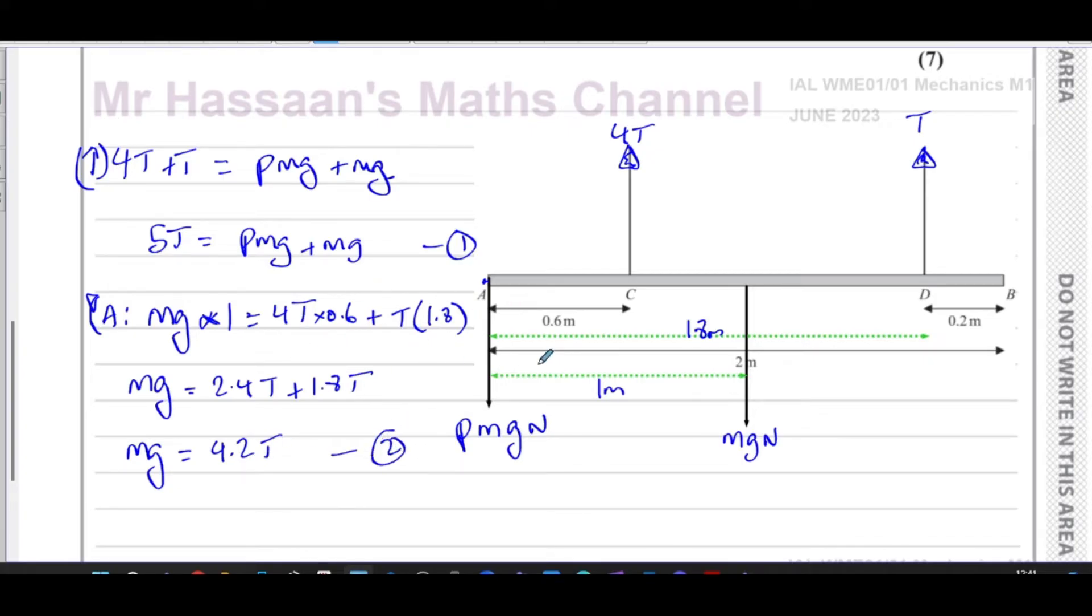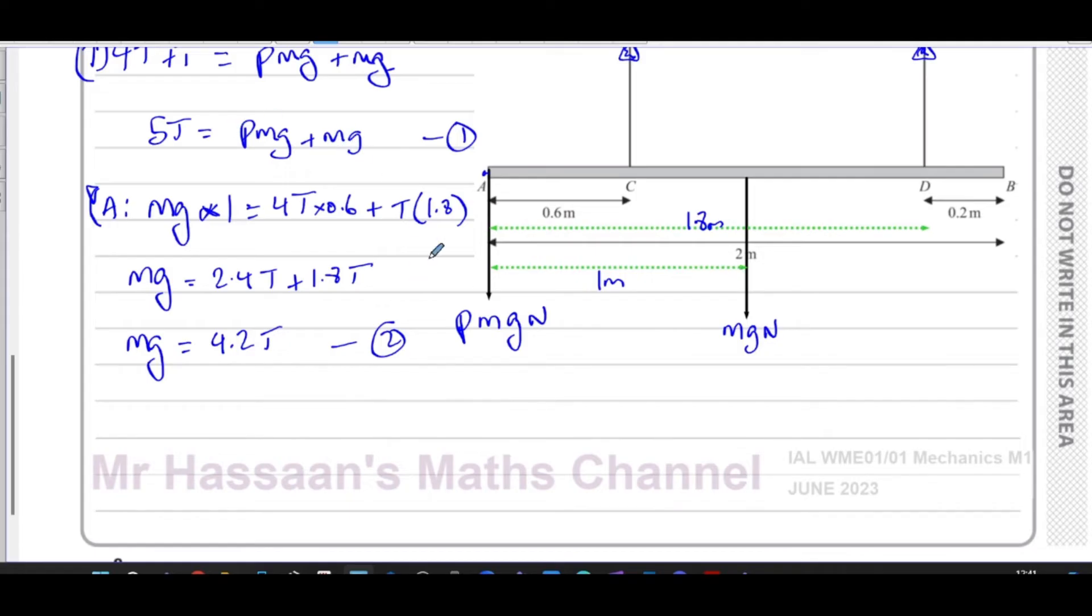How can I solve these simultaneously to find what P is? Well, I can make T the subject of this. So T is equal to mg over 4.2.